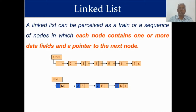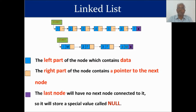In the second example, each node has two data fields: one integer and one character. The first node has integer 1 and character M; second node has integer 2 and character F; third has integer 3 and character F; and the final node has integer 4 and character M. The last node, shown in violet, is not pointing to any next node, so it holds a special value called null.